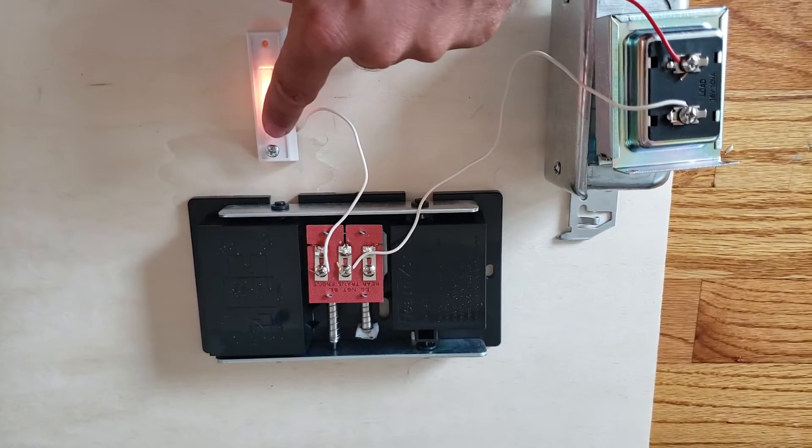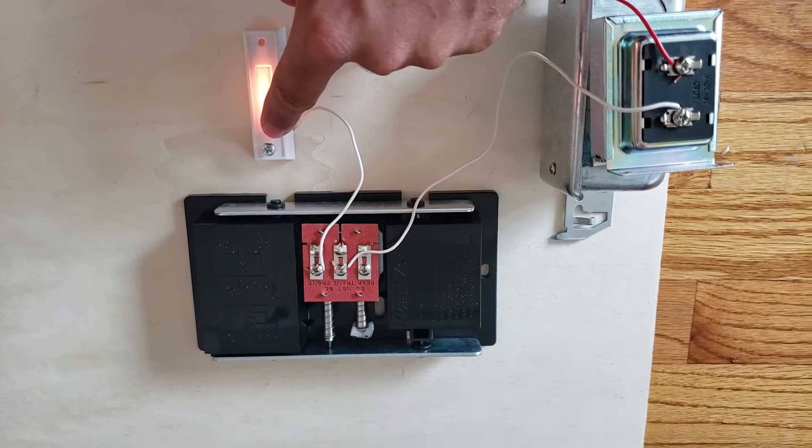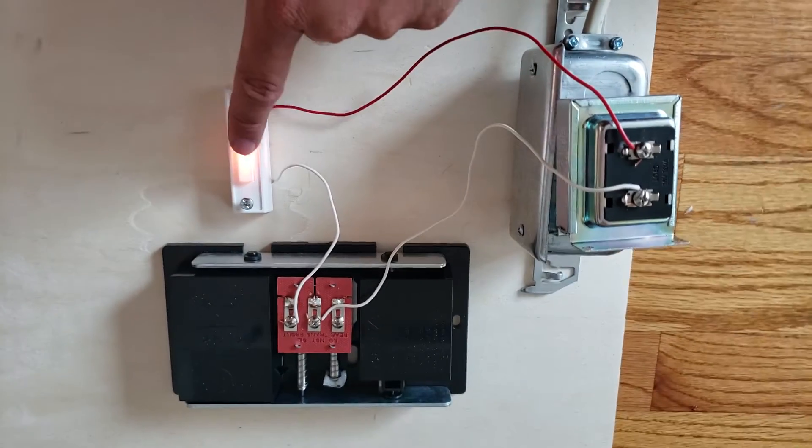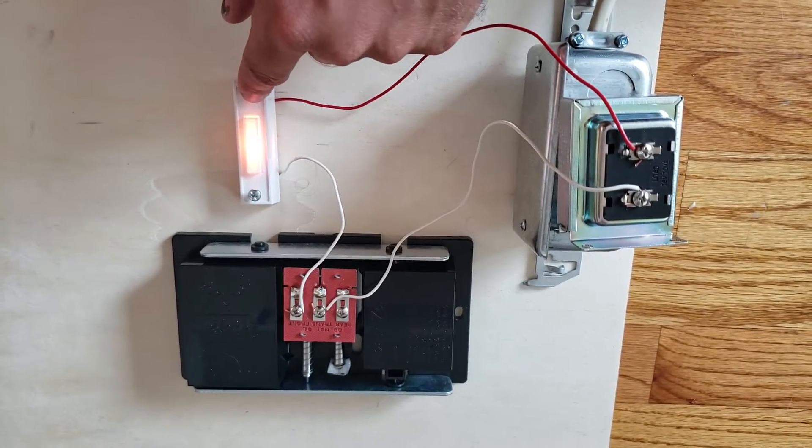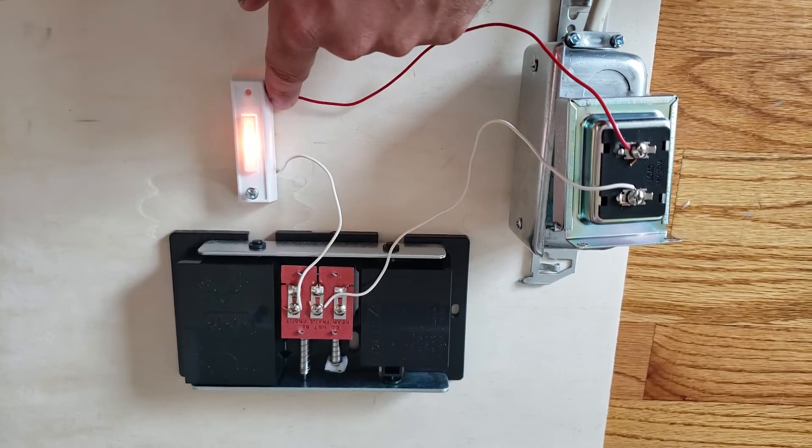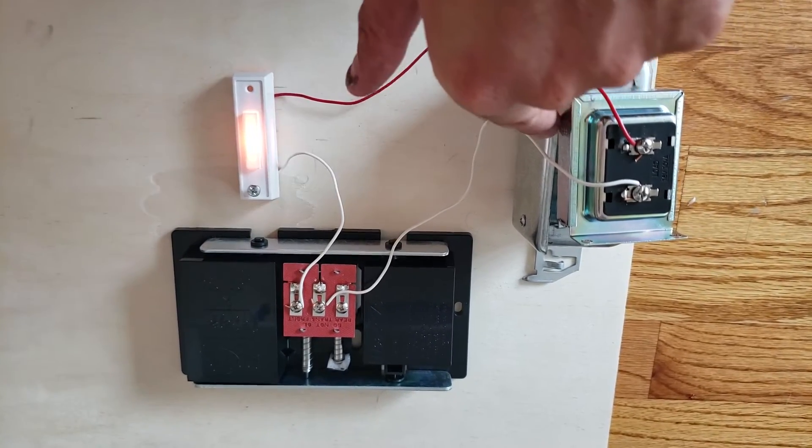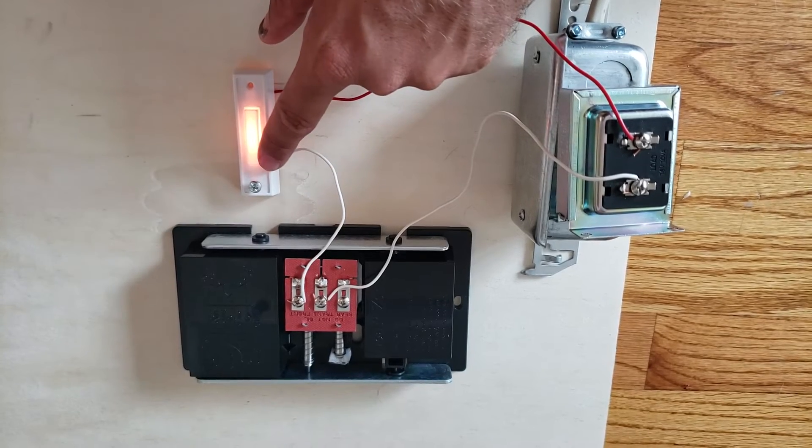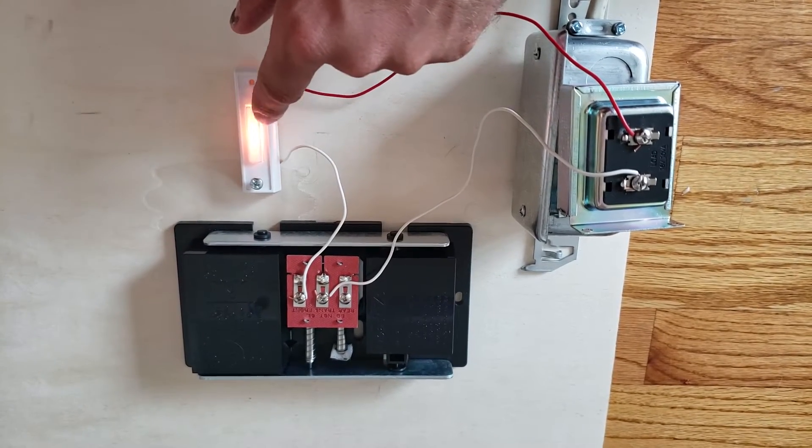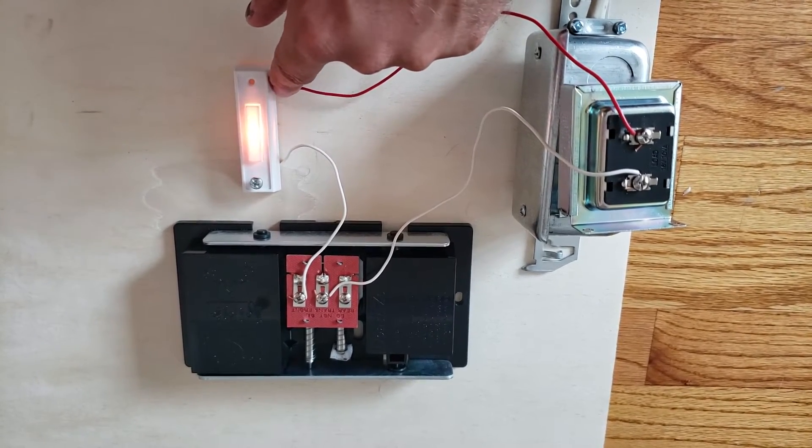and then what you need is a return path for the current from the doorbell button back to the transformer. So that's what we've got - we've got one side wired here to the doorbell and then the other side of the doorbell